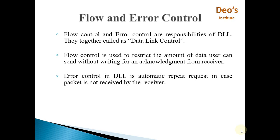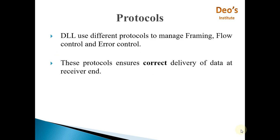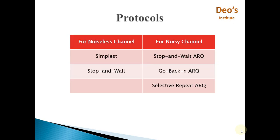Next is error control. Error control in the data link layer is automatic repeat request in case a packet is not received by the receiver. The protocols we are going to see are those used to manage framing, flow control, and error control. These protocols ensure correct delivery of data at the receiver end. Protocols are divided into two forms: for noiseless channels and for noisy channels.